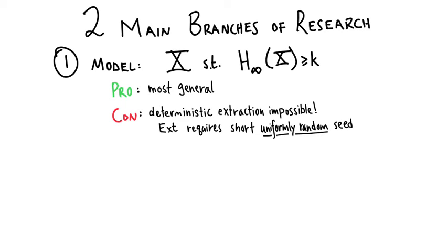So this branch of research studies what are called seeded extractors. In a seeded extractor, we assume that the extractor has a very short — just logarithmic in length — uniformly random seed, in addition to this potentially very long source of randomness x with a lot of entropy. The goal is to extract that entropy out. But unfortunately, if we want to argue the universe is weakly random, then pure randomness must exist. This kind of extractor does not help us get there, because it requires a uniformly random seed — and where is that seed going to come from?